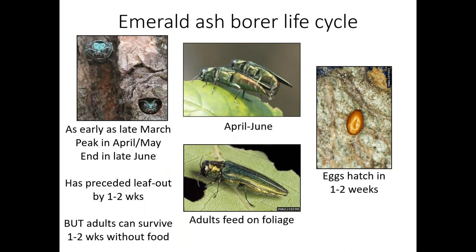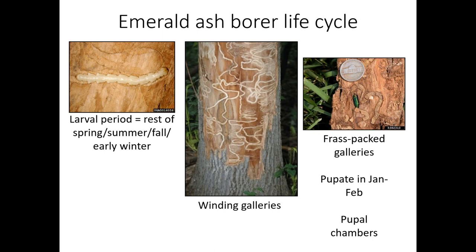Adults mate and do a little foliar feeding, but that causes negligible damage. The eggs hatch in one to two weeks producing flat-headed wood boring larvae — these do all the damage. They create winding galleries, chewing through the phloem and cutting off that conductive tissue so the tree basically starves to death. They pack the galleries full of frass — a fancy entomology term for poop. They pupate over winter and emerge the next spring creating those distinctive D-shaped exit holes.